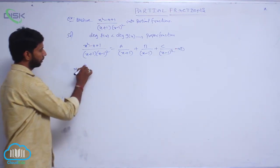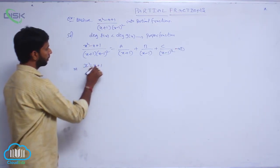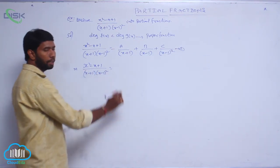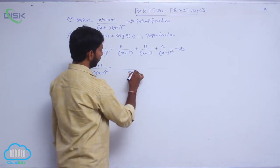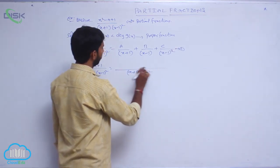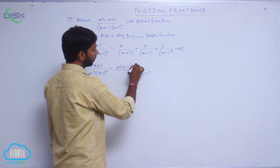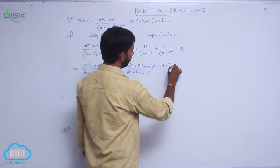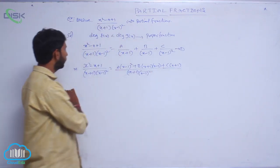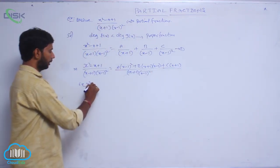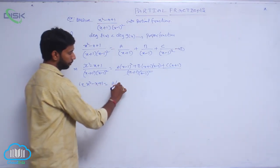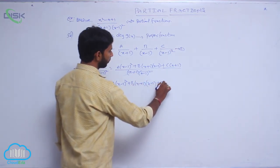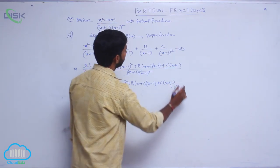Taking LCM on both sides: x squared minus x plus 1 equals A of x minus 1 whole square, plus B of x plus 1 into x minus 1, plus C of x plus 1. Consider this as condition number 2.